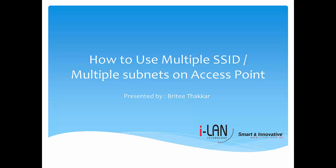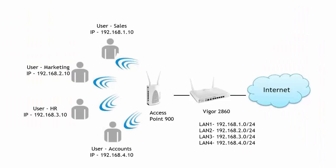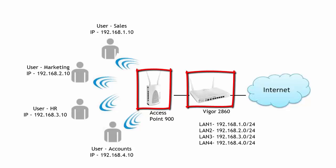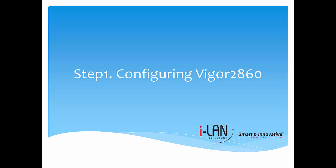This video demonstrates how to set up your access point with multi-SSID. We can set up multi-SSID to separate wireless clients into different subnets. In this example, the EP is connecting to a router that has multiple subnets, and it is passing traffic via trunk port. We will configure EP900 and Vigor2860 one by one.